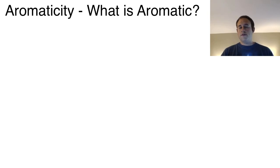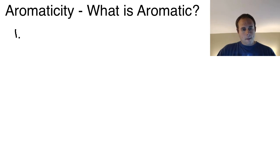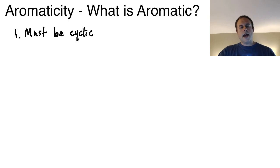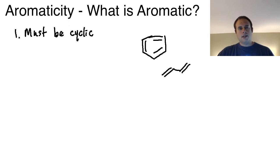The first rule is very obvious and easy to determine, and then the second and third are more difficult. Rule number one: the compound must be cyclic — it has to be some sort of ring system. Benzene, which we all know is aromatic, is in a ring formation where the p orbitals are locked in. By contrast, 1,3-butadiene is not a ring system, so while it is conjugated, it's not cyclic and therefore cannot be aromatic.